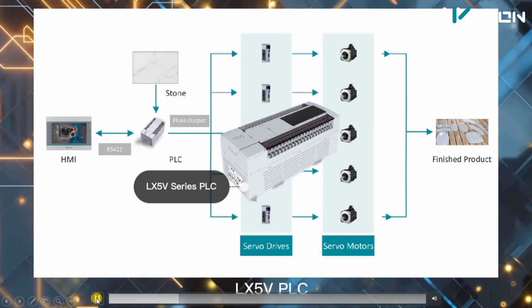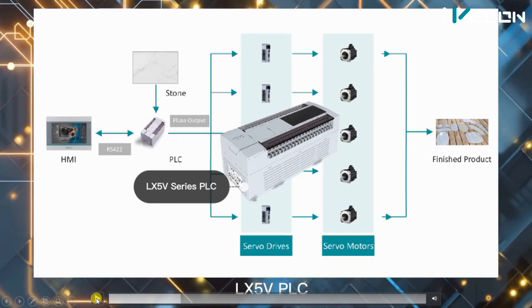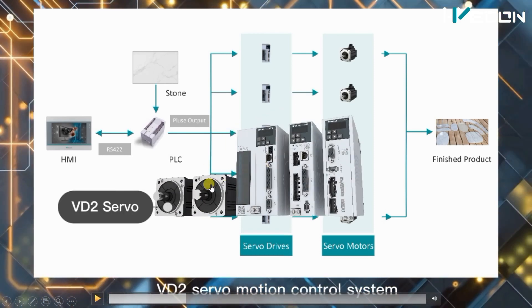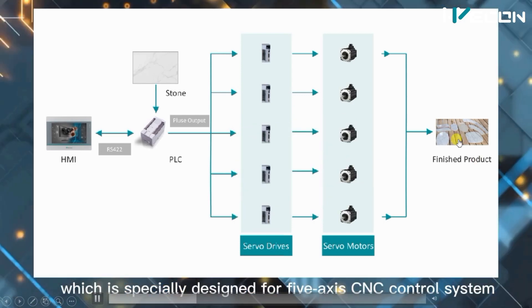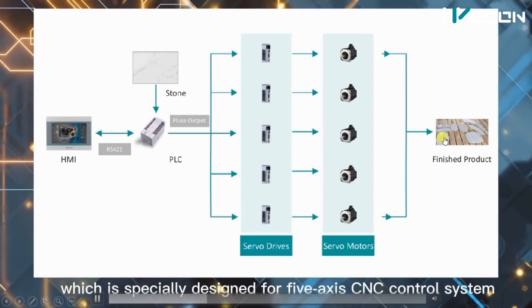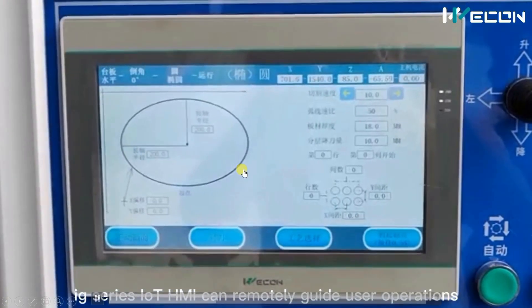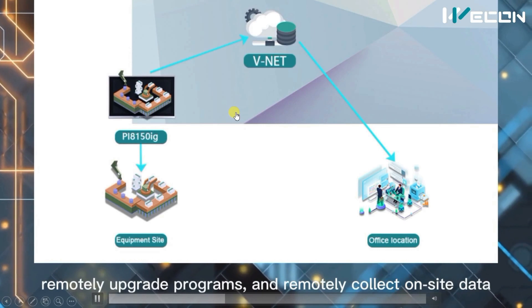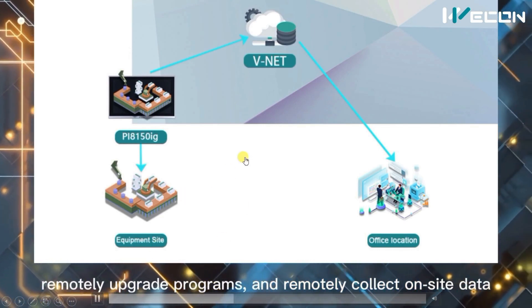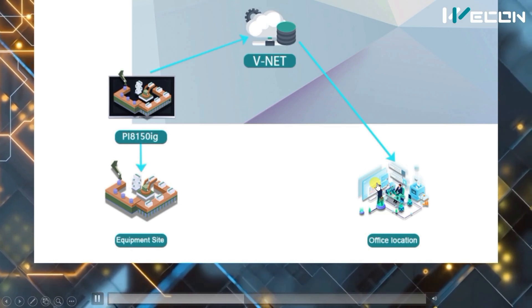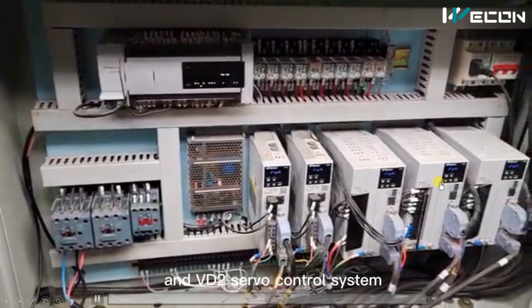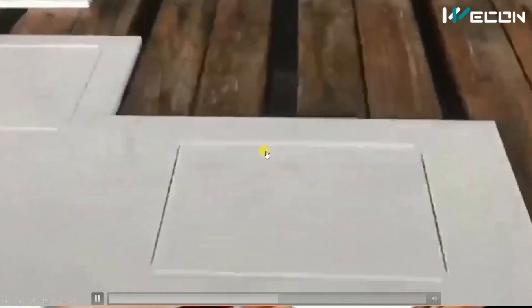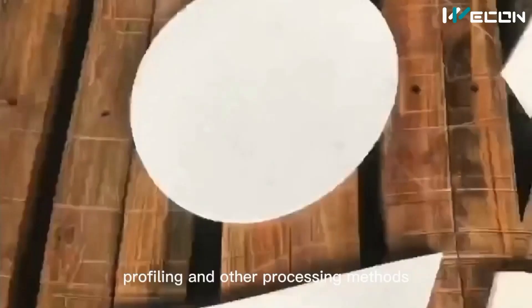It has an LXV5 series beacon PLC, servo drives, and servo motors for five-axis control. You can see there are five axes and five servo drives and motors, which can help us make different slate, granite, and marble slabs. This is the interactive HMI screen for each shape. Because of Internet of Things, we can operate this from a remote location also. This is how the real panel looks — you can see the servo drives, and it can make any shapes with very high precision.